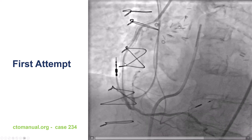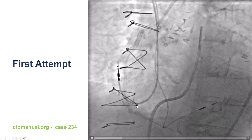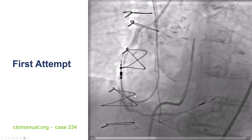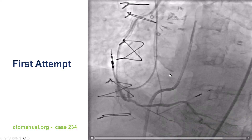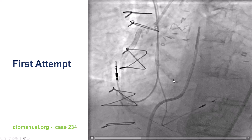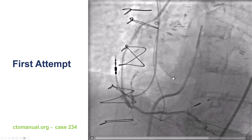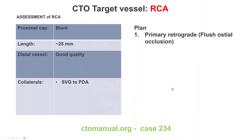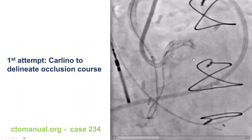From the first attempt, there is diffuse disease in the vein graft and some retrograde filling of the right coronary artery. It's a flush aortic ostial CTO with significant calcification in the aorta. Based on this, we decided to go for a primary retrograde approach.